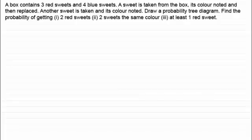Hi. In this video I want to extend the work that we've been doing on probability tree diagrams. I'm going to be talking about mutually exclusive events, how we work out probabilities of combining events. We'll also be looking at the AND rule and the OR rule for probability, and the best way I can demonstrate this is through this example.